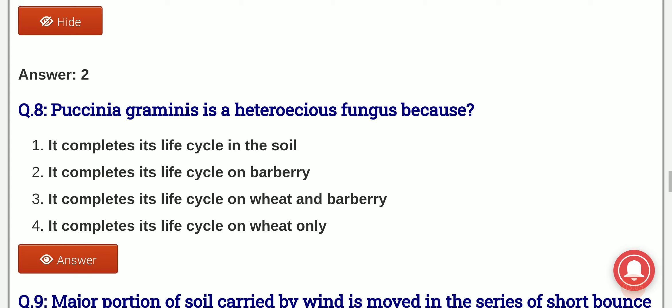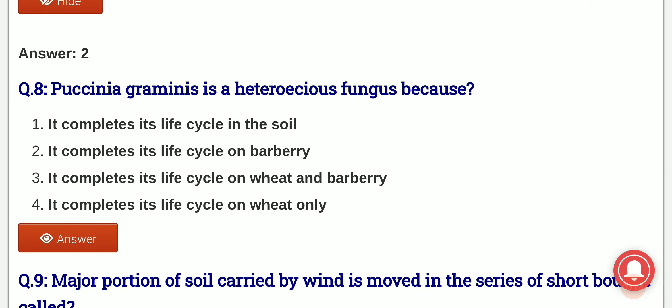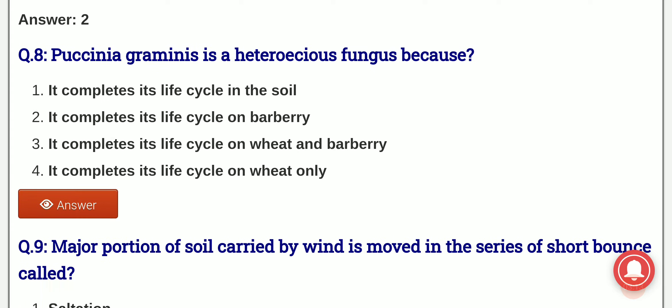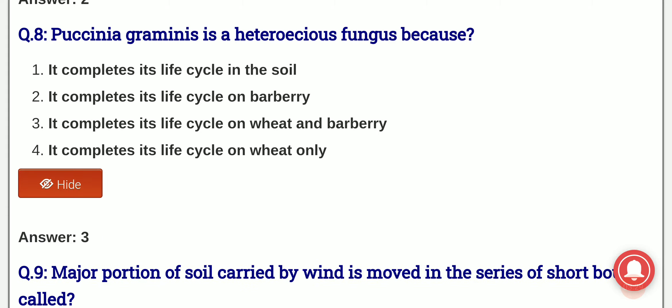Question 8: Puccinia graminis is a heteroecious fungus because the options are it completes its life cycle in the soil, it completes its life cycle on barberry, it completes its life cycle on wheat and barberry, or it completes its life cycle on wheat only. And the answer is option 3, that is it completes its life cycle on wheat and barberry. As it requires two hosts, that is why Puccinia graminis is known as a heteroecious fungus.